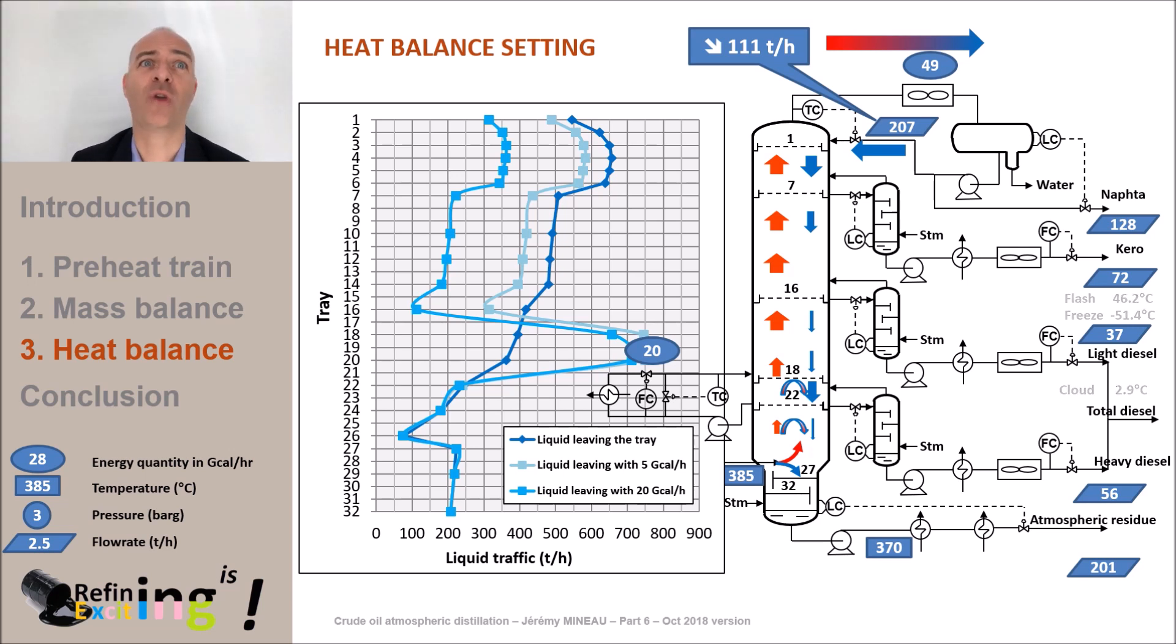The kerosene flash point drops by 1.4 degrees C. The kerosene freezing point is almost unchanged, just like the total diesel cloud point. The question you may now ask yourself is, but is there a limit in the calories amount that can be removed with this pump around?